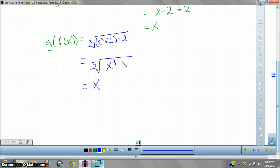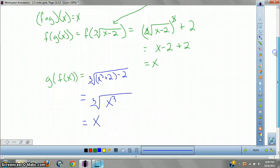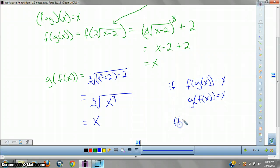And again, if you get X, it means they're inverses. So they're inverses. They're one to one. If f of g of X equals X and g of f of X equals X, then f of X, well, g of X is f negative one of X, is inverse.